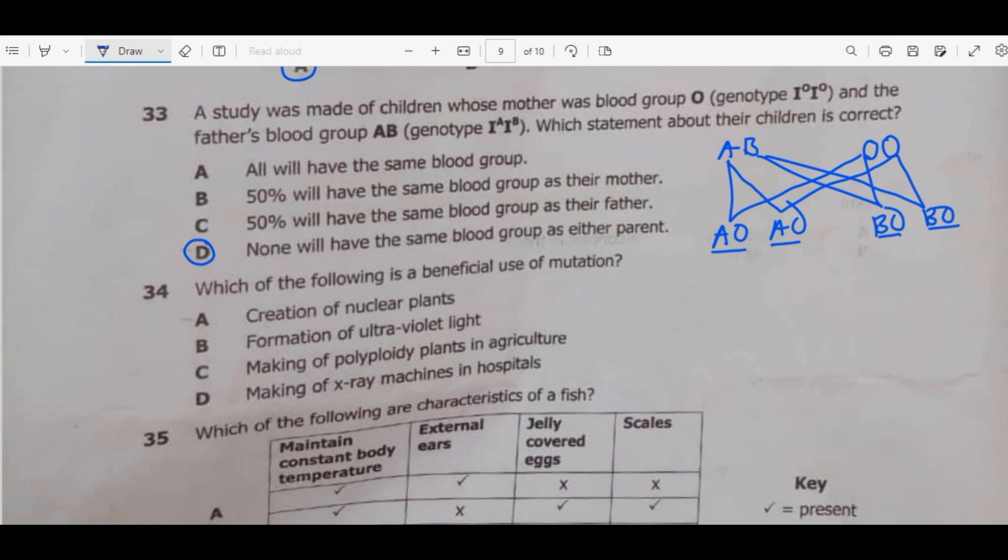Question 34. Which of the following is a beneficial use of mutation? A, creation of nuclear plants. B, formation of ultraviolet light. C, making of polyploid plants in agriculture. So the answer is C.